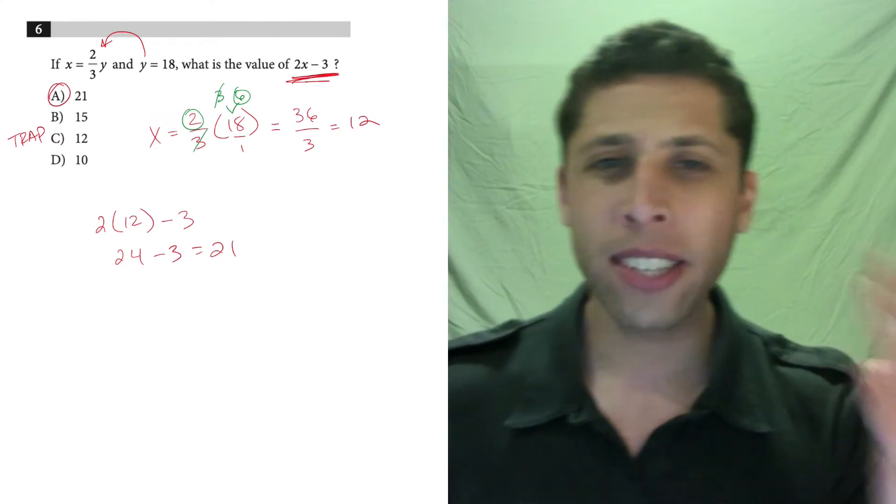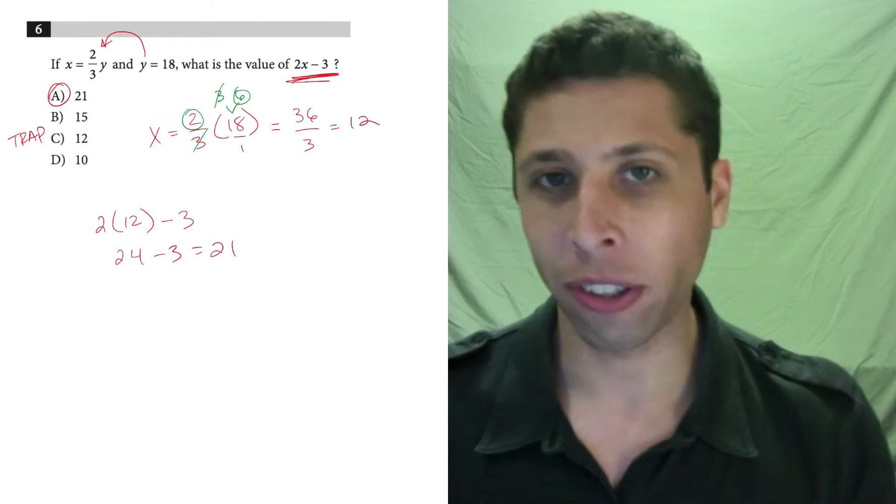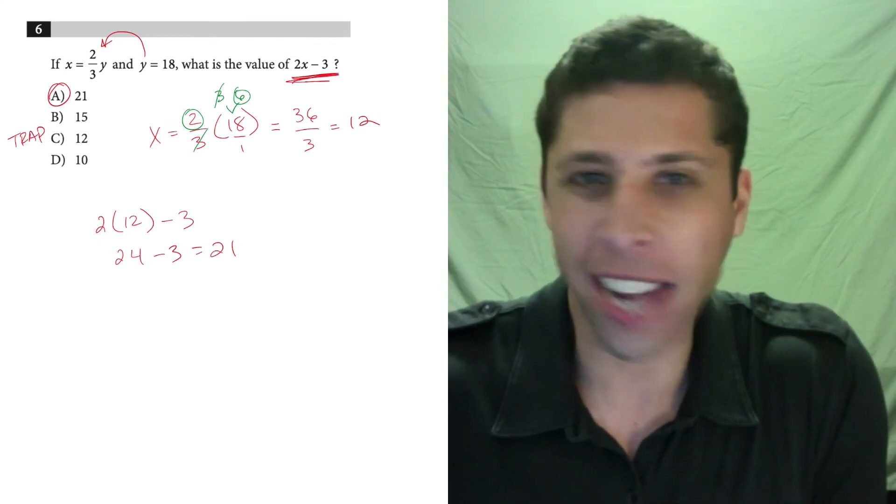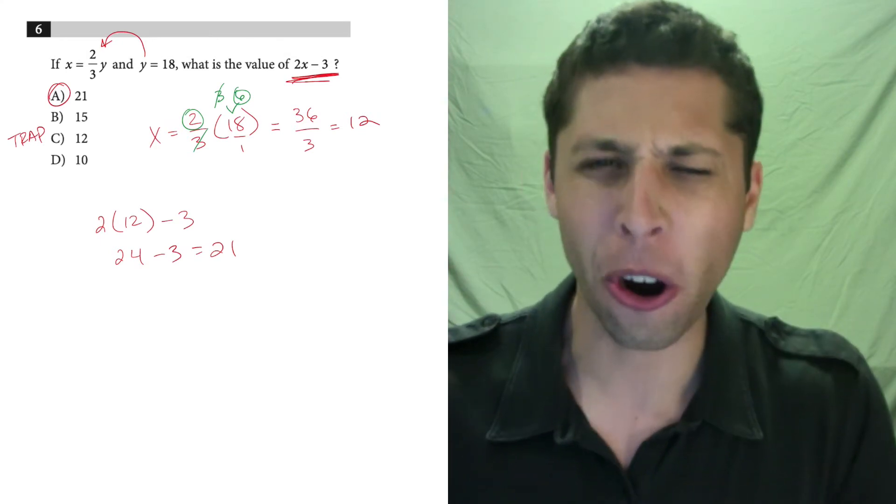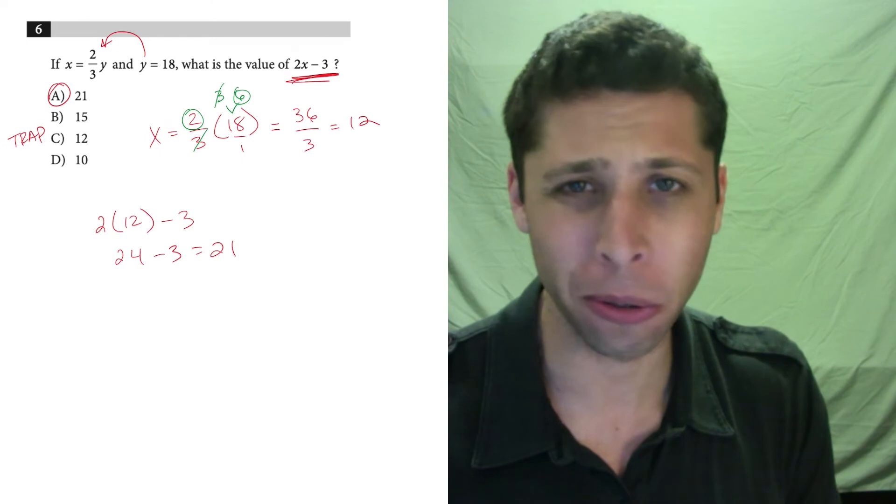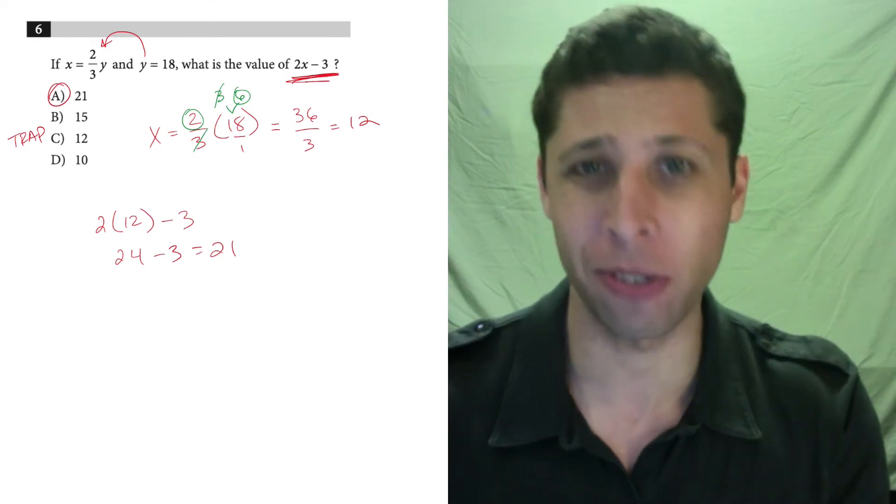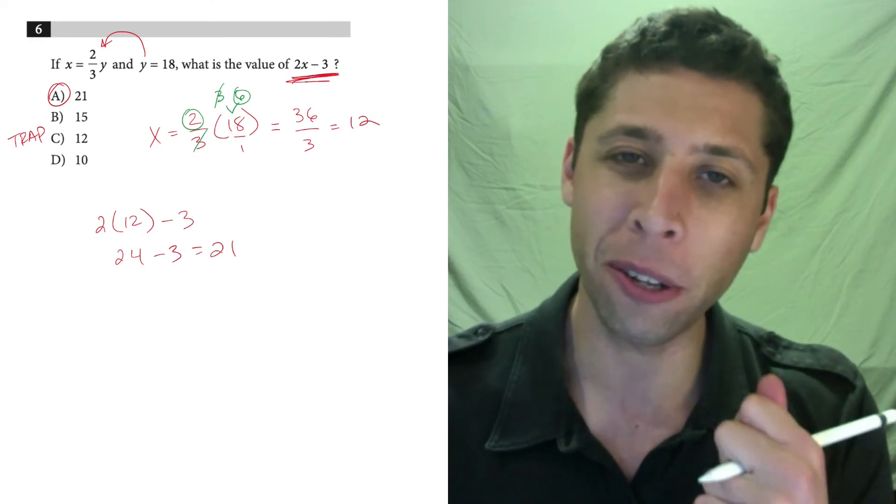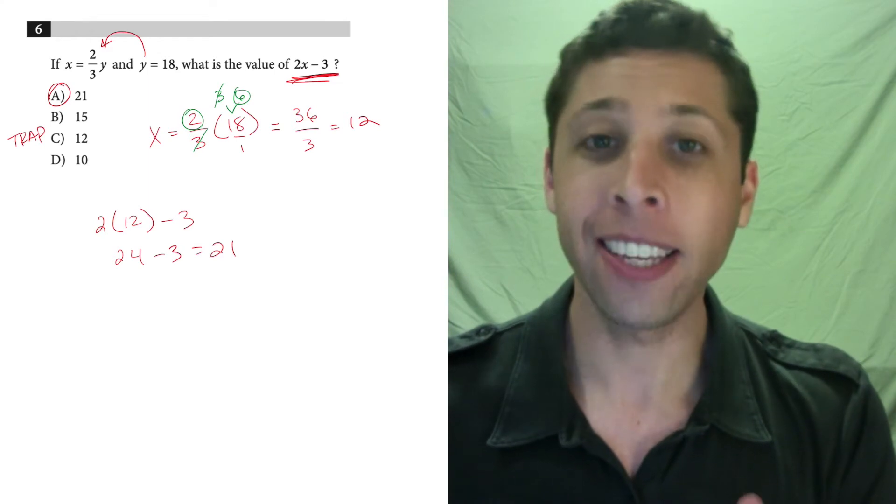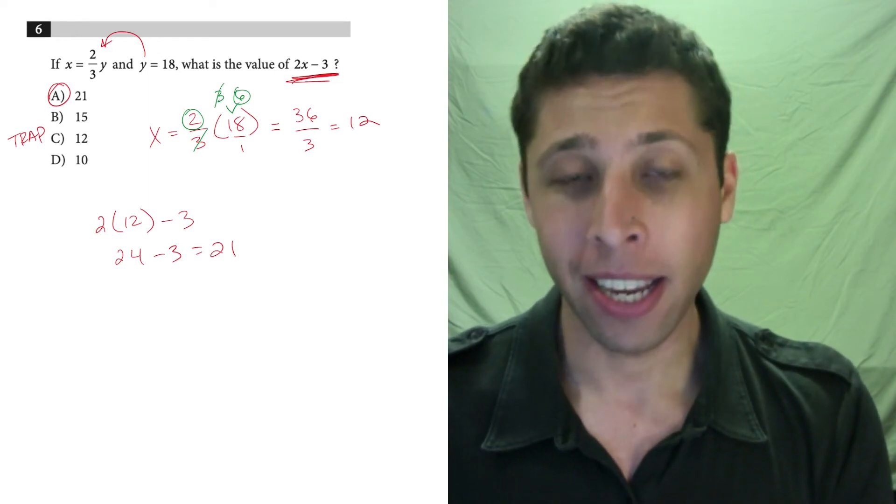So why does the SAT do this extra little thing at the end, right? This didn't add any difficulty to the question. It wasn't hard to multiply 12 by 2 and subtract 3. Why make us do that? Well, because they're really testing your habits. And the SAT at bottom is a test of your habits.